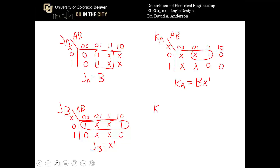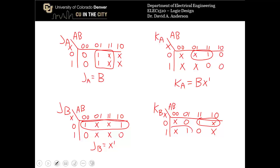For K_B, the K-map has a more complicated function. Circling the appropriate bubbles gives K_B = AX' + A'X, which can be rewritten as K_B = A ⊕ X (A exclusive-OR X).